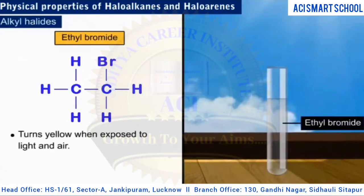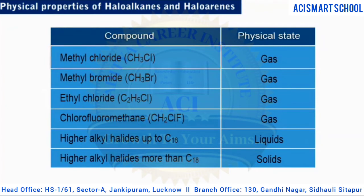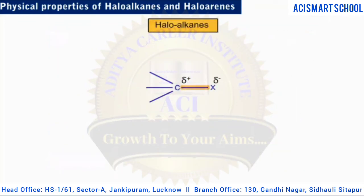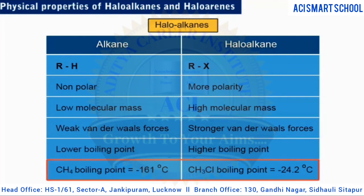For example, ethyl bromide turns yellow when exposed to light and air. Many volatile alkyl halides have a sweet smell, but this may not be noticeable unless the concentration is relatively high. Lower alkyl halides including methyl chloride, methyl bromide, and ethyl chloride, as well as some chlorofluoromethanes, are gases at room temperature. Higher alkyl halides are liquids or solids. Due to the greater polarity and higher molecular mass of haloalkanes compared to the parent hydrocarbons, the dipole-dipole and van der Waals forces of attraction are stronger, giving haloalkanes considerably higher boiling points.